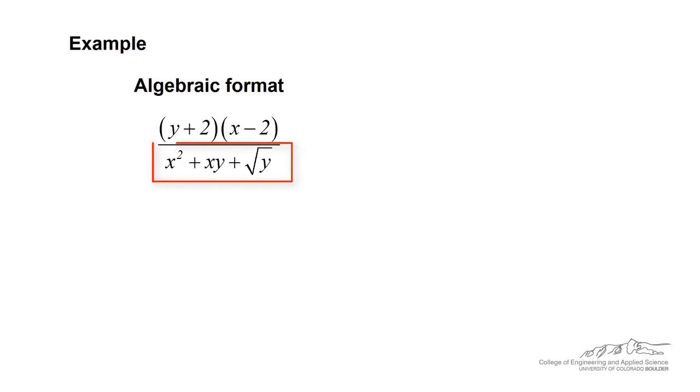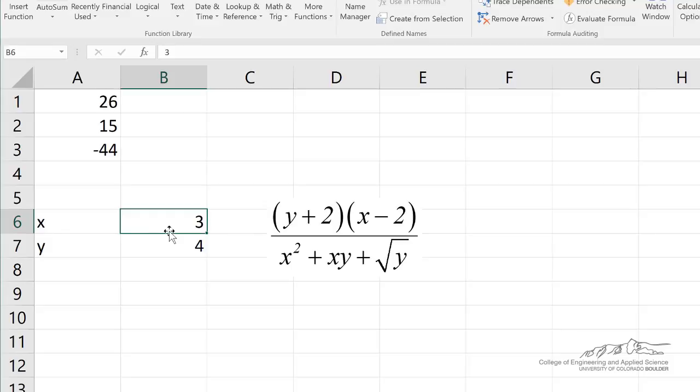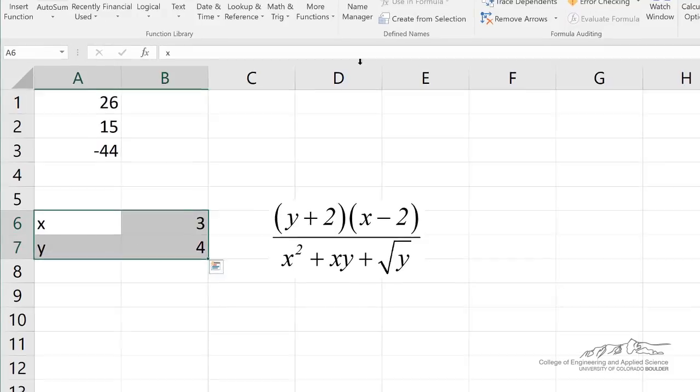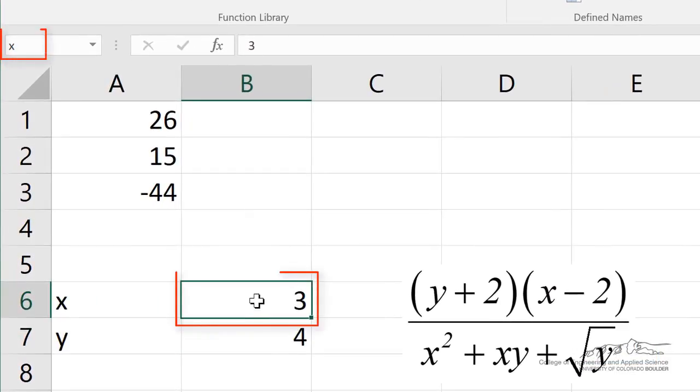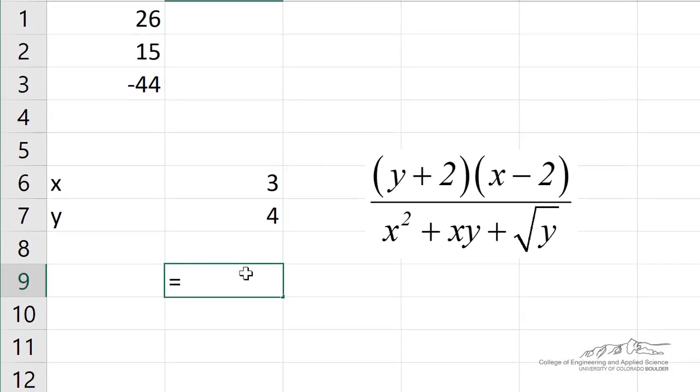So the denominator here, obviously, has to be grouped. So we're going to force that grouping using parentheses. So I've got two cells here, one for X and one for Y. I'm going to name these by selecting those cells and creating from selection. So now B6 is named X, and B7 is named Y. So I'm going to put this expression into cell B9. Again we need to force the grouping on the denominator, so we need to put that in parentheses.